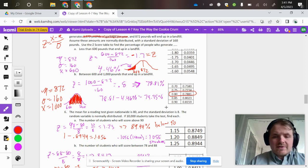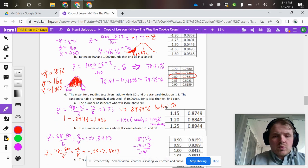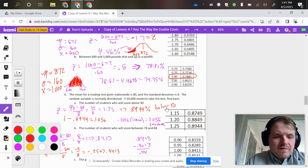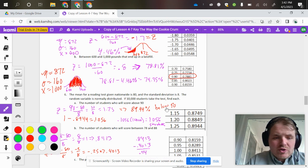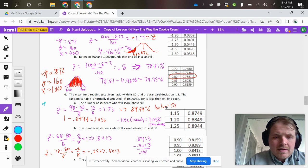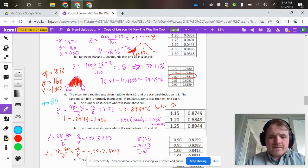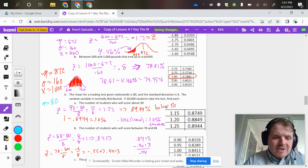So moving on, still calculating z-scores and working with them. We have a new situation: a reading test where the mean is 80. If I'm tracking the mean and standard deviation, I've got a mean of 80 and the standard deviation is 8.